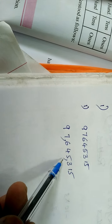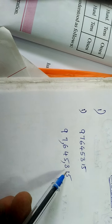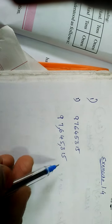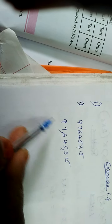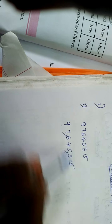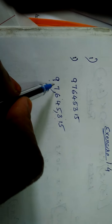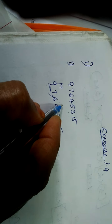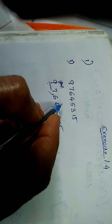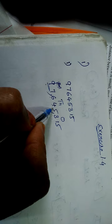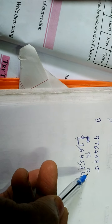First write the problem, then place the commas according to the places — every three places from right to left. Here: one, two, three places — comma; one, two, three places — comma. This is the ones period, thousands period, and millions period. Reading the number: 97 millions, 645 thousands, 315. Don't write 'millions,' 'thousands,' 'ones' — just place the commas.